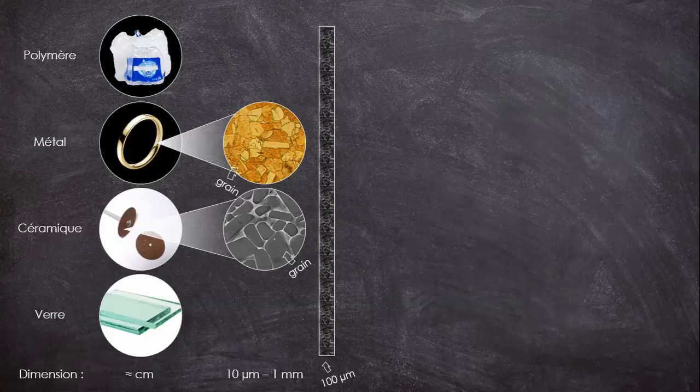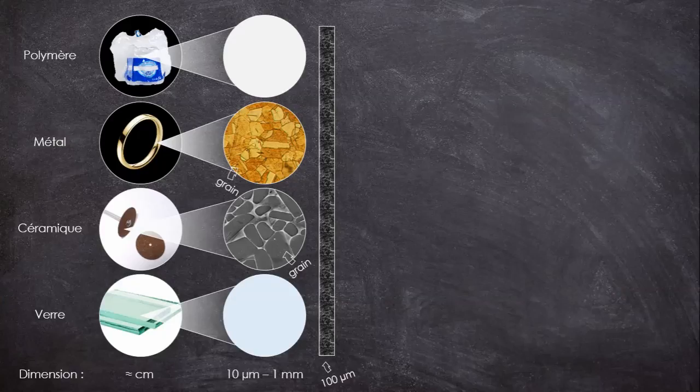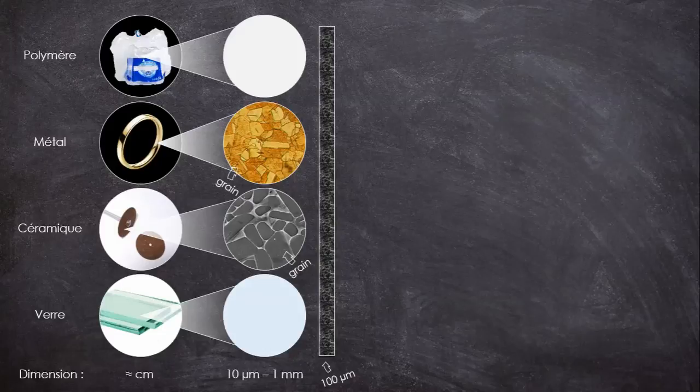Par contre, rien de similaire n'est visible ni sur le verre, ni sur le film plastique. Du coup, tout ça c'est bien, mais on n'est pas vraiment plus avancé. Donc allons plus loin, jusqu'à ce que les atomes apparaissent. A ce stade, on va commencer à voir des choses pour nos quatre objets.